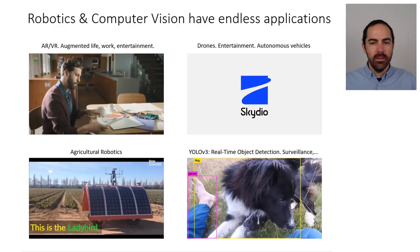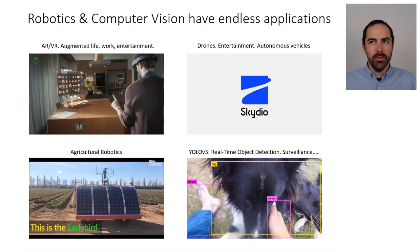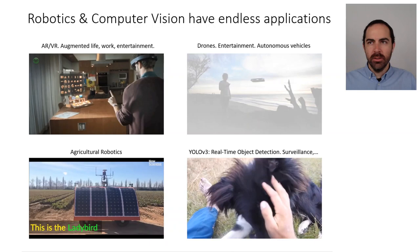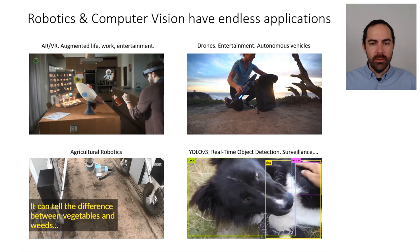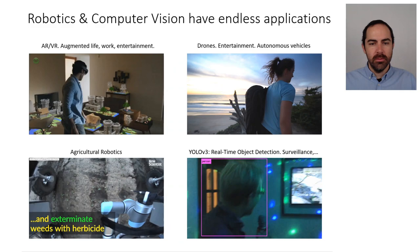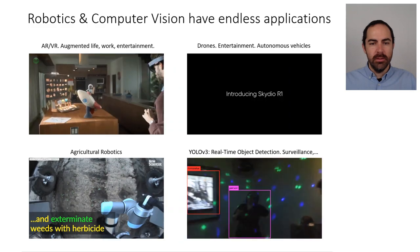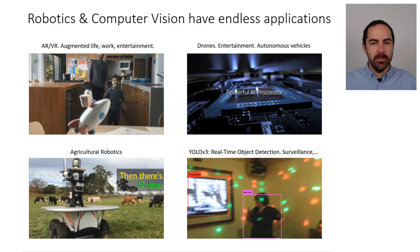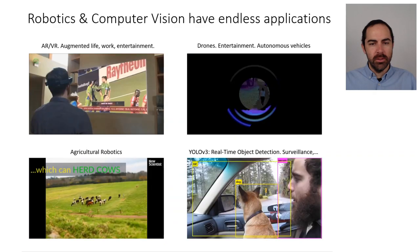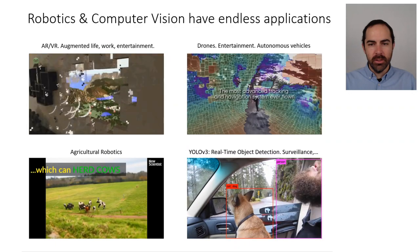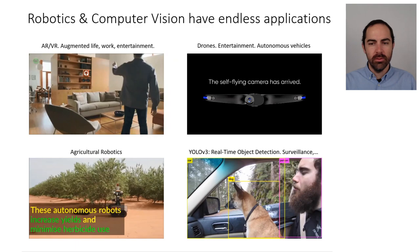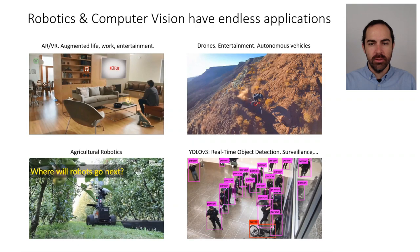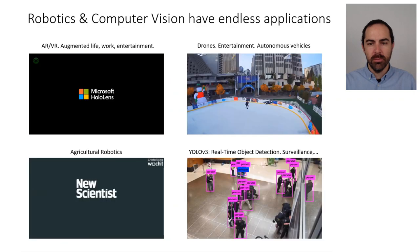On the bottom left, you see some agricultural robotics from University of Sydney in Australia. These are autonomous robots able to go around, follow some paths, take images, segment the fruit, and help quite a lot with farming. On the bottom right, you see real-time object detection called YOLO, which can be used for surveillance. Here you have a camera detecting people, bicycles, and all different types of objects in the scene.